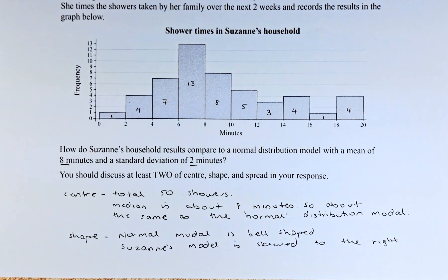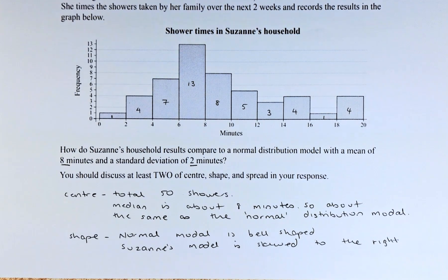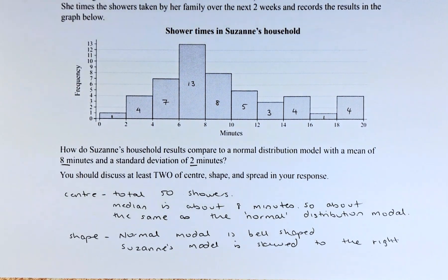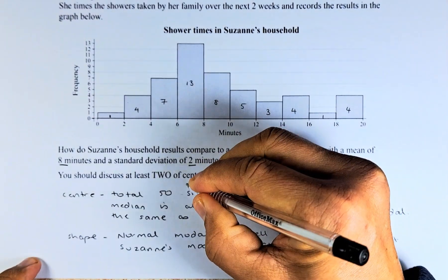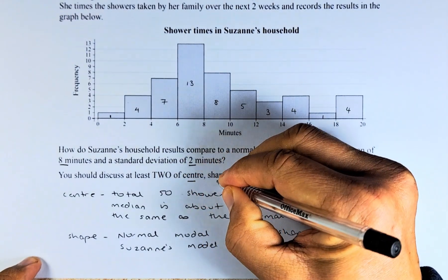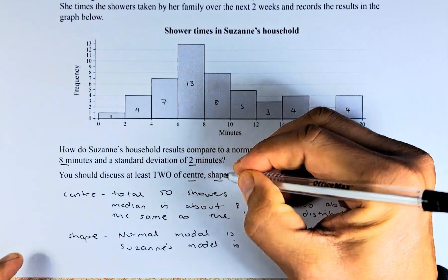You can write as many things as you like, but we shall concentrate on 2 because the question asks you for 2. We will talk about the center and the shape because they are the two easiest. We will talk about the center first.